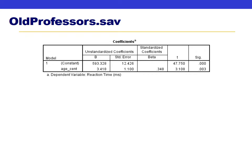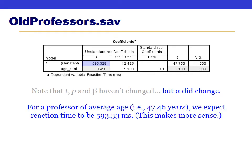The output shows that the t-statistic, p-value, and beta are the same as before, but alpha is now different. Because the predictor is mean-centered, alpha now tells us the predicted reaction time for a professor of exactly average age — 47.46 years old. We can now say that for a professor of average age, we would expect their reaction time to be about 593 milliseconds, which makes much more sense than talking about an infant professor.